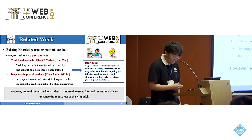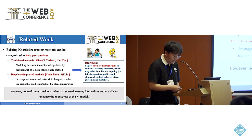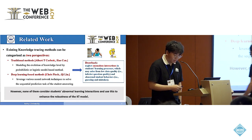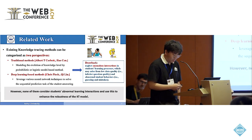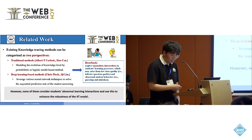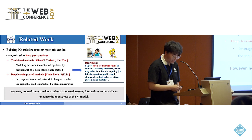However, none of them consider abnormal learning interactions that occur during the student learning process and utilize them to enhance the robustness of KT models. The abnormal learning interactions may arise from low question quality, inferior question quality, and abnormal student behavior such as guessing and mistakes.